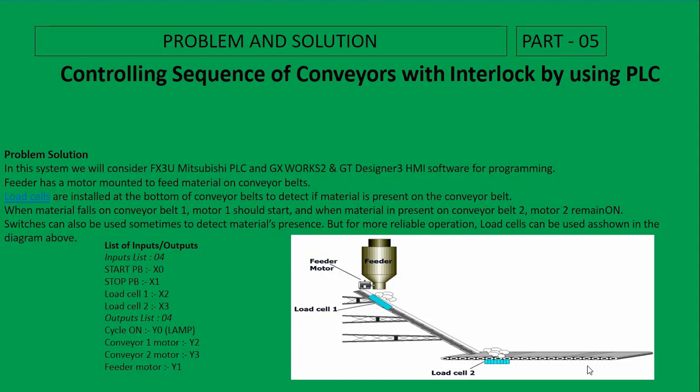Assalamu alaikum. Welcome to my regular series problem and solution for part 5. Today we will solve the problem of controlling the sequence of conveyors with interlocking by using PLC.